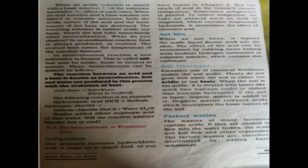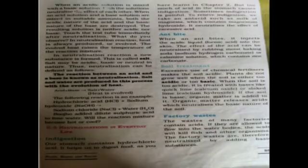Third is soil treatment. Excessive use of chemical fertilizers can make soil more acidic, and plants do not grow well when soil is too acidic or too basic. If the soil is acidic, it is treated with quick lime (calcium oxide) or calcium hydroxide to neutralize it. If the soil is basic, organic matter is added into the soil, because organic matter releases acids which neutralize the basic nature of the soil.